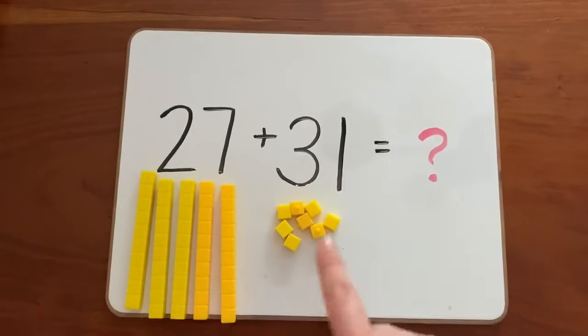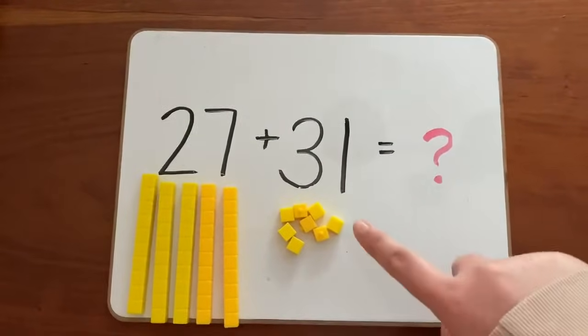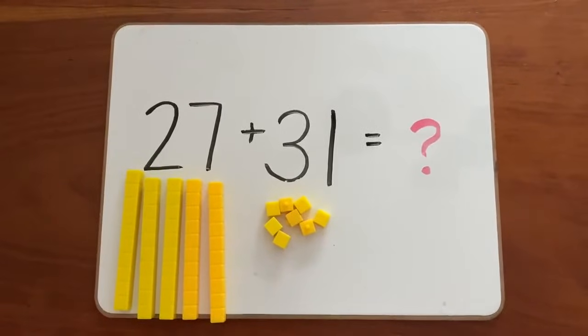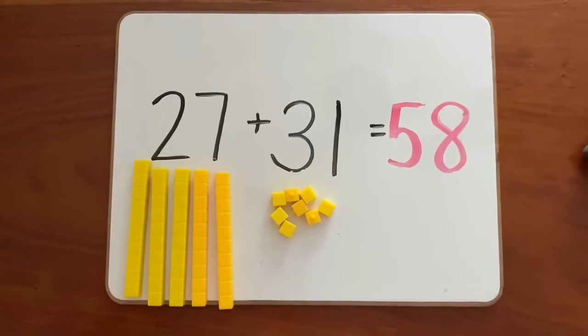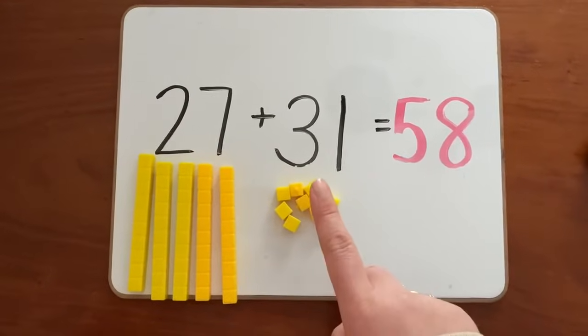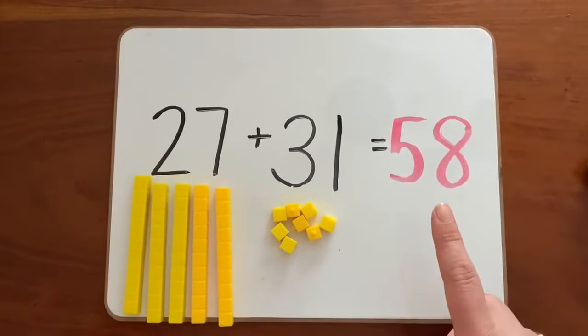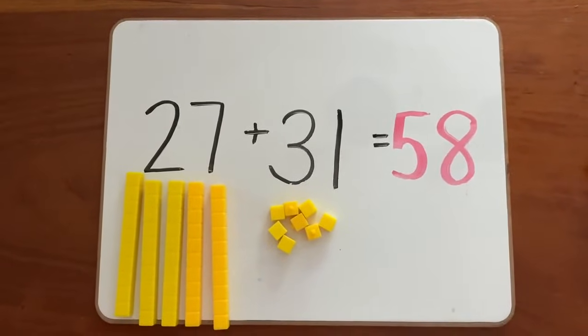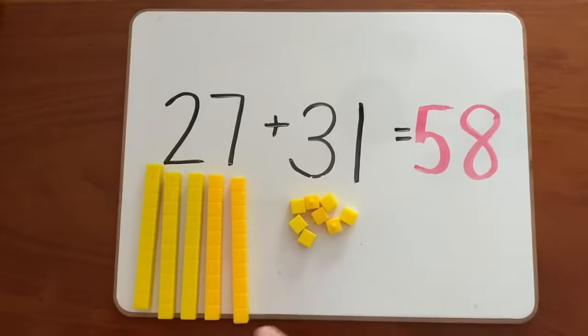When we count all of our longs and cubes together, the number we got was 58. So here is our finished number sentence: 27 plus 31 equals 58. Those are big numbers, but we were able to add them together with the help of our longs and cubes.